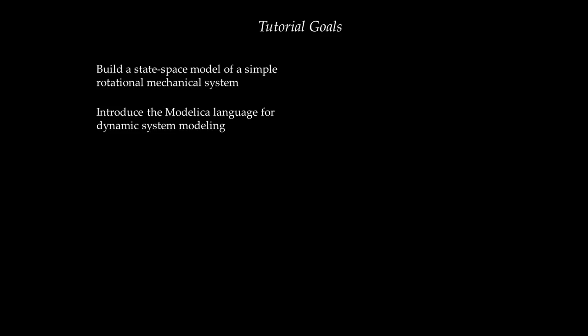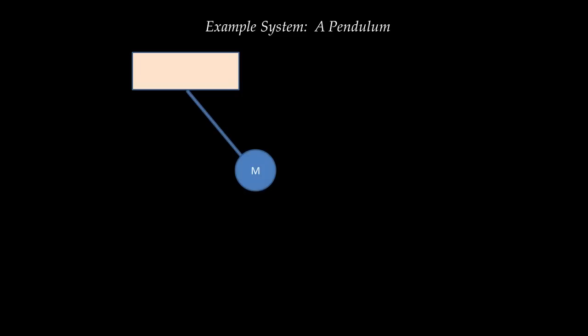The first goal is to build a state-space model of a simple rotational mechanical system — specifically a pendulum. The system has a fixed foundation with a pendulum of mass M and length L, acted upon by an external torque U of T. I'm interested in the angle between the pendulum and the vertical, which I call Y of T.